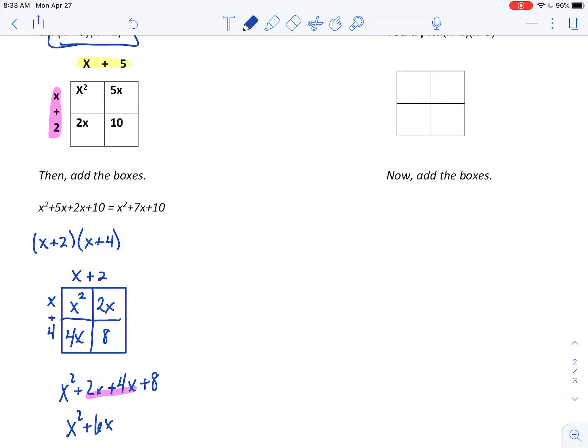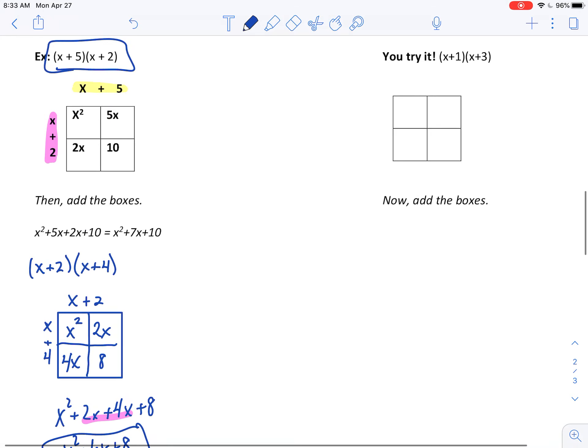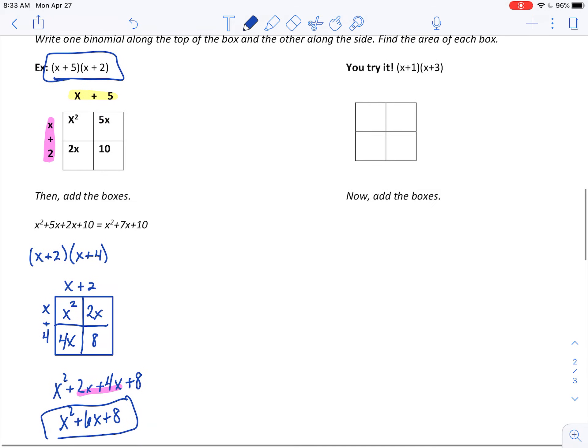And once we've got all four boxes filled up, then all we've got to do is add up our four spots. So x squared plus 2x plus 4x plus 8. Or x squared plus, and we combine our like terms here, plus 6x plus 8.